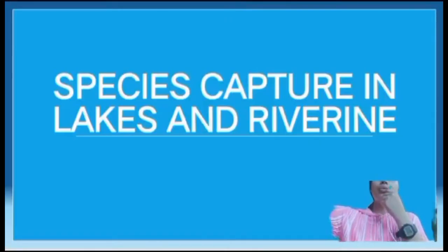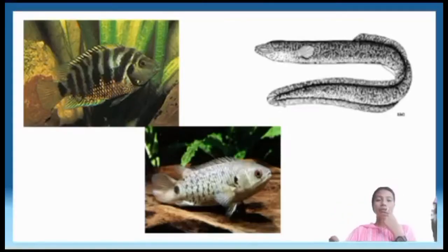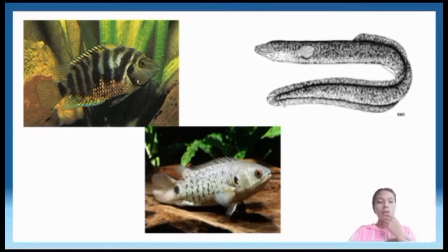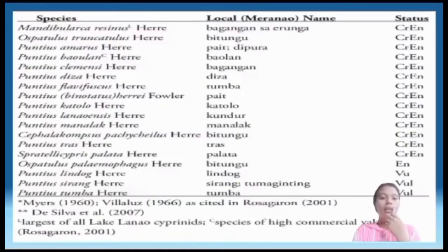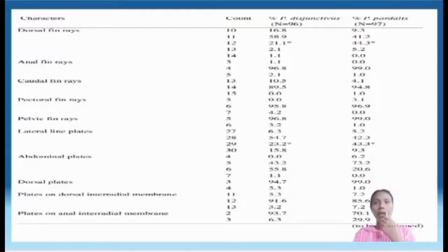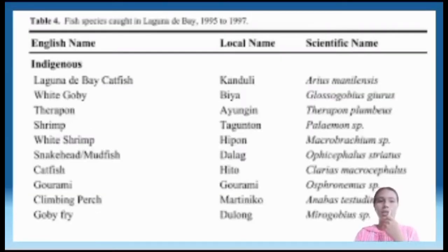There are many freshwater fish species captured in lakes and rivers. Some examples include the Laguna de Bay catfish, white goby, surplus shrimp, and white shrimp.